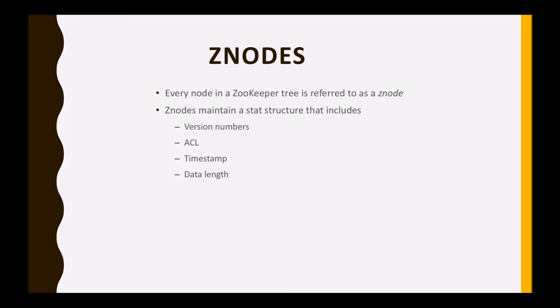The next thing is timestamp. It represents the time elapsed from Z node creation and modification, and it is usually represented in milliseconds.